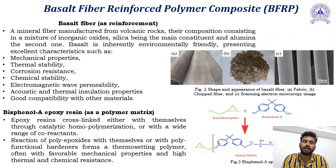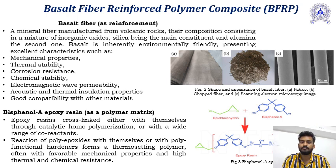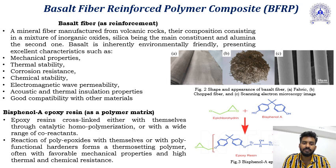Basalt fiber reinforced polymer composite: basalt fiber is a mineral fiber manufactured from volcanic raw material, with its composition consisting of a mixture of inorganic oxides — silica being the main constituent and aluminum being the second. Basalt is inherently environmentally friendly, having excellent mechanical properties, thermal stability, corrosion resistance, chemical stability, and thermal insulation properties, with good compatibility with other materials. Basalt acts as the reinforcement and bisphenol epoxy resin serves as the polymer matrix, which cross-links to form a thermosetting polymer.